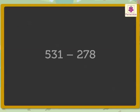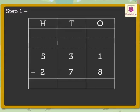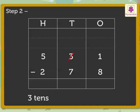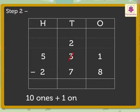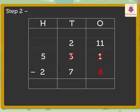Now let us subtract 531 and 278 directly. Step one: write the numbers in the hundreds, tens, and ones columns. Step two: subtract the digits in the ones column, that is 1 and 8. As 1 is smaller than 8, we regroup 3 tens as 2 tens plus 10 ones. Now we have 10 plus 1 is equal to 11 ones.